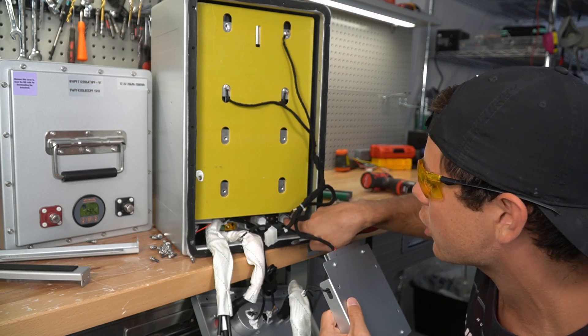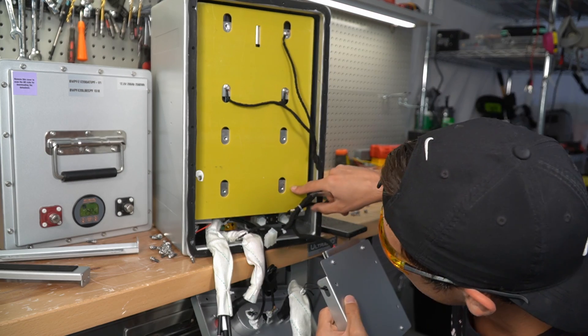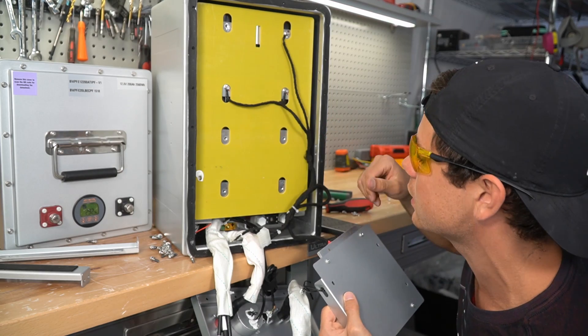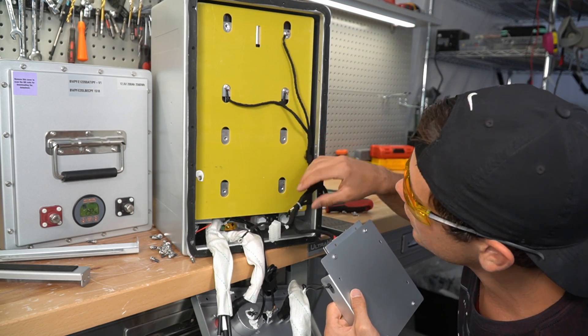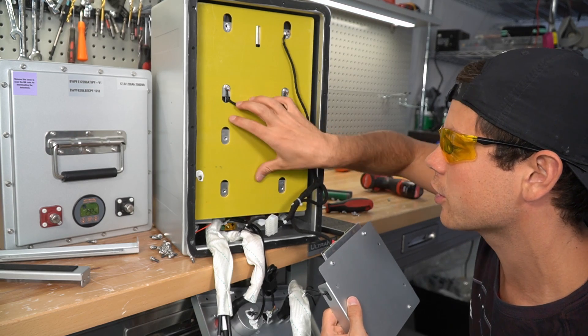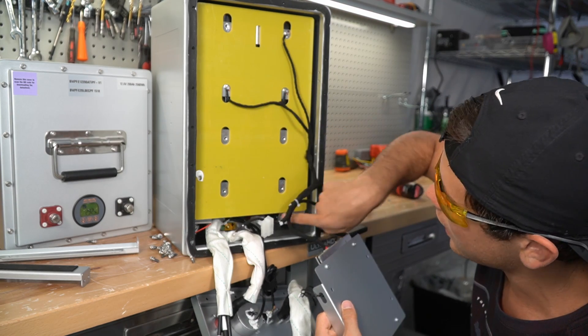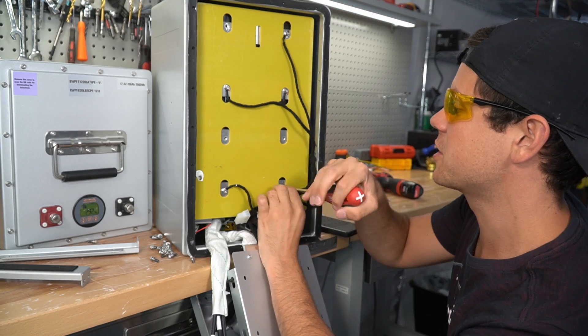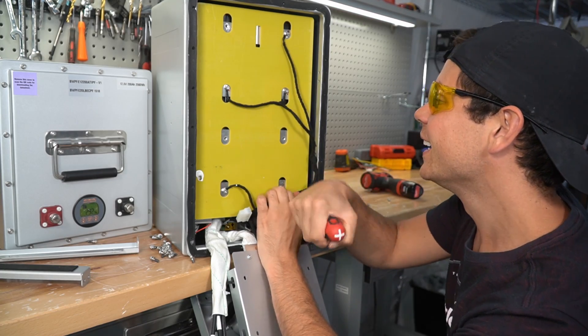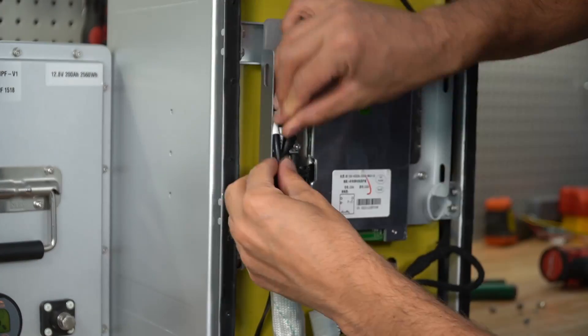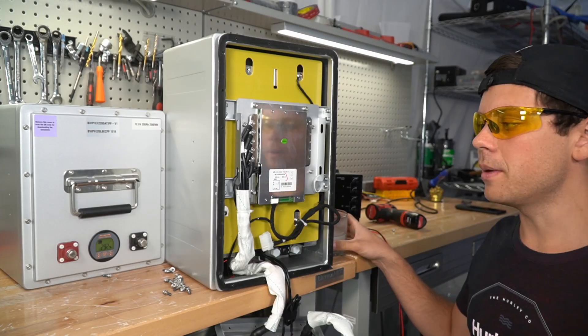So yeah, overcurrent protection is on the negative and so is the shunt. The shunt makes sense. But whenever I see a fuse, I always think it's connected to the higher potential, but not in this configuration. So you have two fuses on the negative, the overcurrent protection on the BMS and this large ANL fuse. I think this is the proper configuration.